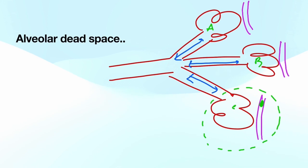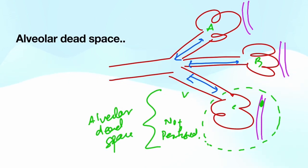So this area contributes to alveolar dead space. People sometimes get confused between dead space and shunt, so let me give you an example.